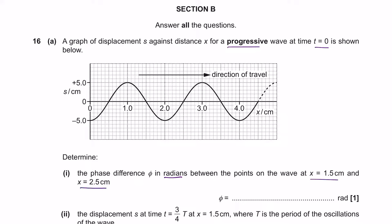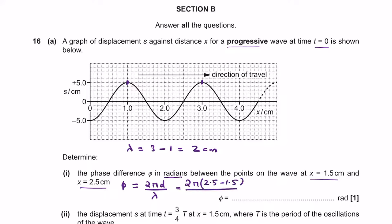The formula for phase difference is phi equals 2π D over λ, where D is the distance between the two points, and λ is the wavelength, which we can figure out from the graph. Taking the peak-to-peak distance, that's a wavelength of 3 minus 1, so 2 centimetres. Plugging in: 2π times (2.5 minus 1.5) over 2 centimetres gives pi radians as the answer.